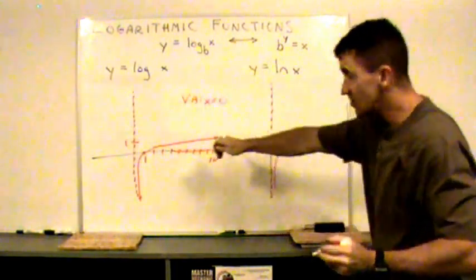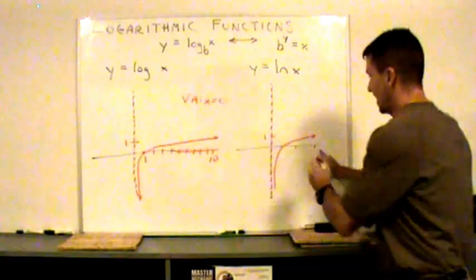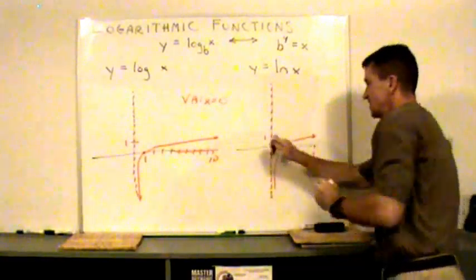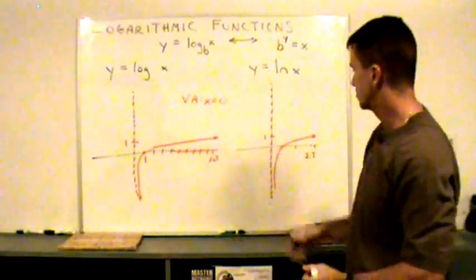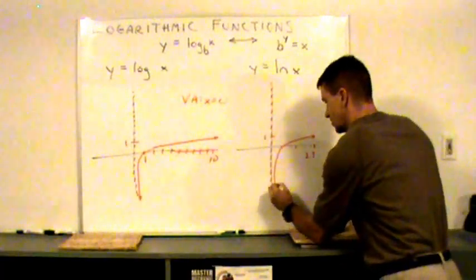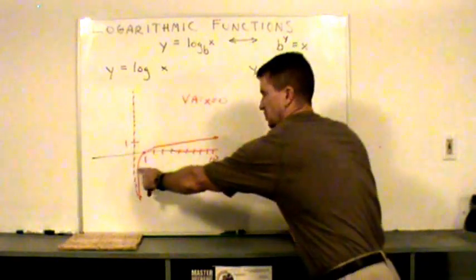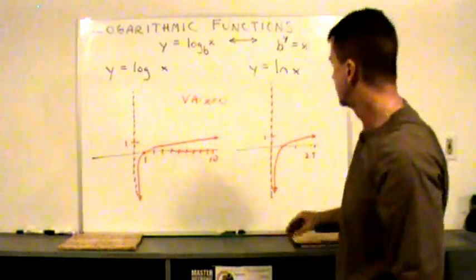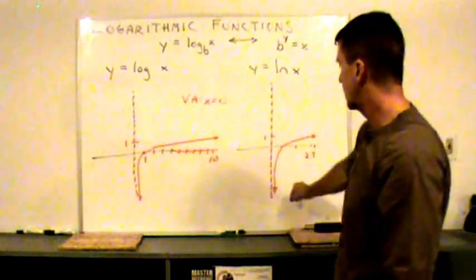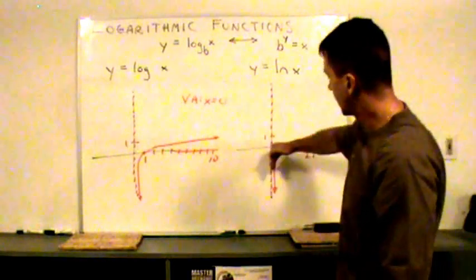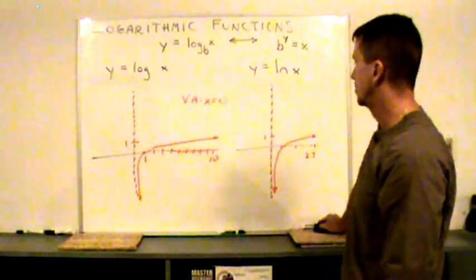But the sketch still looks the same. At like 2.7, this is getting up to one. It's a rough sketch. Looks basically the same. And this goes down like that. When you try to graph these on a graphing calculator, this disappears. It gets so steep. So be aware of that. This really goes on and on and on forever right up against that vertical asymptote.